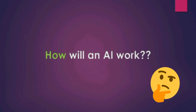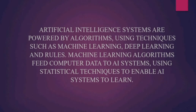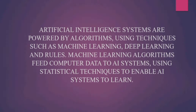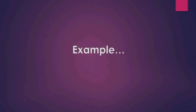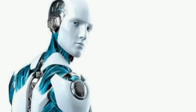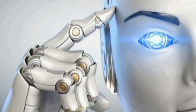How does AI work? Artificial intelligence systems are powered by algorithms using techniques such as machine learning, deep learning, and rules. Machine learning algorithms feed computer data to AI systems using statistical techniques to enable AI systems to learn. An example of AI would be human-like robots — we have machine robots at present, but researchers, scientists, and technologists are working hard to bring AI to that level.